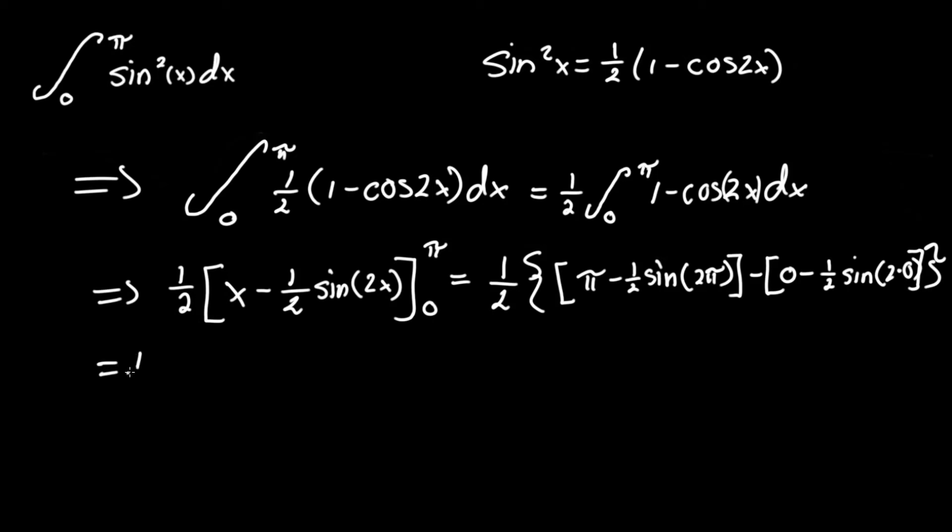This will equal one half times pi again, minus one half sine 2 pi. We know that sine 2 pi is equivalent to sine of 0, which is just 0, so pi minus 0. And again, we're going to subtract 0. And what is one half of sine 0 again? This will be 0, but you know you can plus 0—it doesn't matter. We know it's still going to be 0.